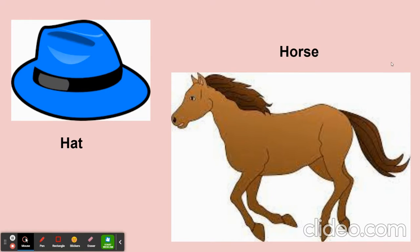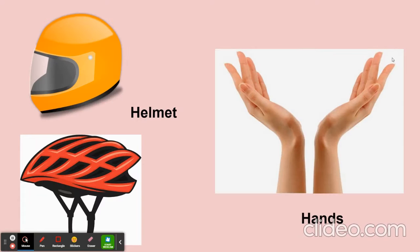H for horse. Next one is H for helmet — it protects our head. When papa is driving, he wears this. When you ride a bicycle, you wear this. There are different types of helmets.